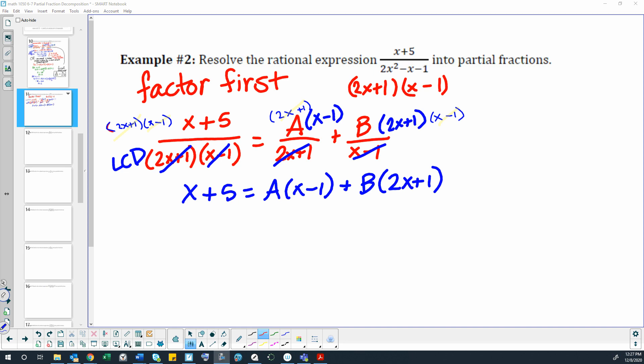All right, this is 6.7 example 2. We're finding the partial fractions for x plus 5 over 2x squared minus x minus 1.